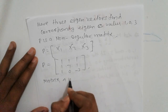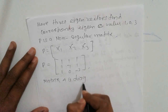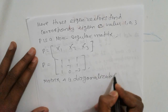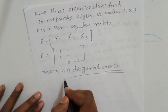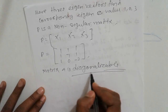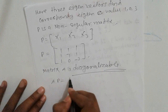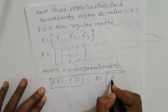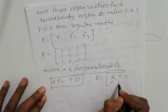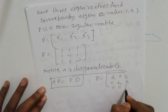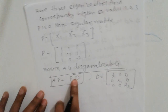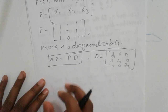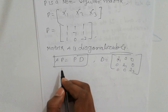Matrix A is diagonalizable. That is important. We know that if A is diagonalizable, then AP = PD, where D is the diagonal matrix with entries λ1, 0, 0; 0, λ2, 0; 0, 0, λ3. So we use the relation AP = PD.